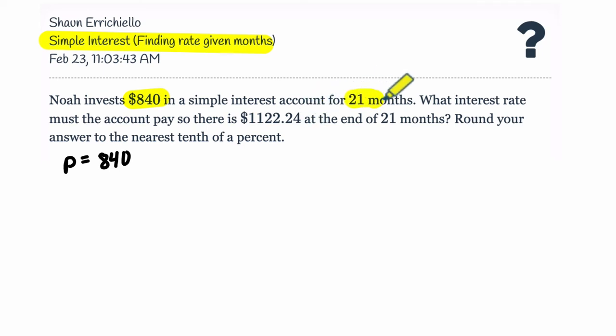And it's in a simple interest account, so that means the interest is only applied to the principal. For 21 months. So we want our time in years, not months. So we're going to take the amount of months and divide that by 12. That'll tell us how many years there are, because there are 12 months in a year. So this is our time, 21 over 12 years, that we're investing this money.